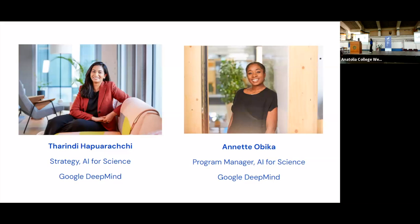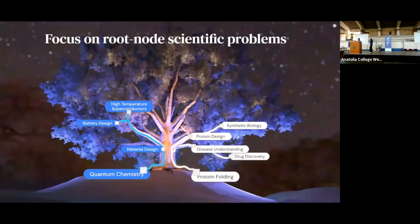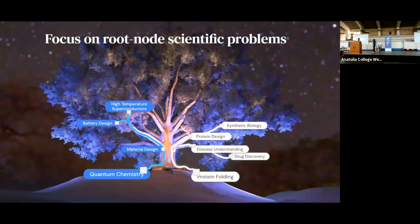Taryn already introduced what our mission is, which is essentially to transform the way that we do scientific discovery using AI. And the way we do that is basically by choosing to focus on these root node scientific problems. So if you imagine something like the tree of life, where at the bottom, you have these root nodes, really complex scientific challenges that if solved could potentially unlock many downstream applications in the branches and the leaves. So take protein folding, for example, is one such root node challenge that we are really interested in at Google DeepMind. And obviously that has many downstream benefits for humanity in healthcare, but also specifically in synthetic biology, protein design, drug design, disease understanding, and so on.